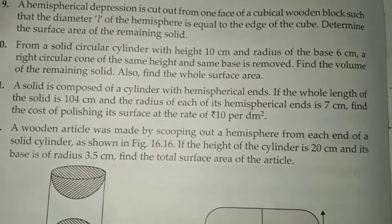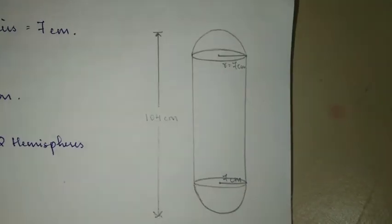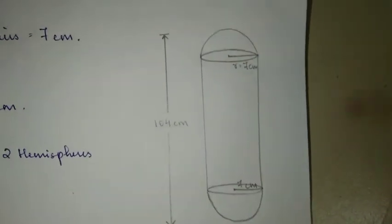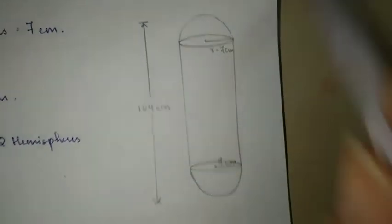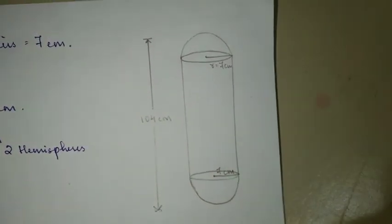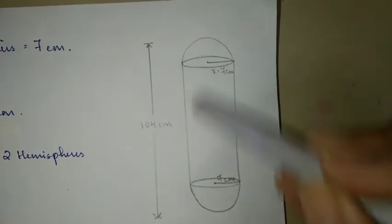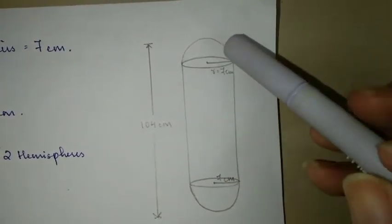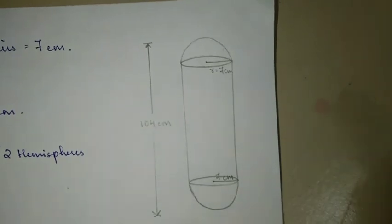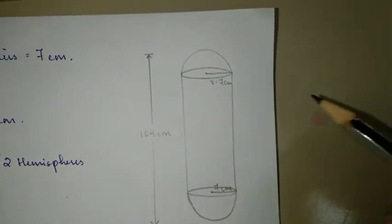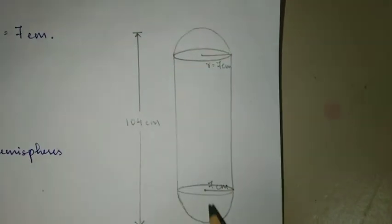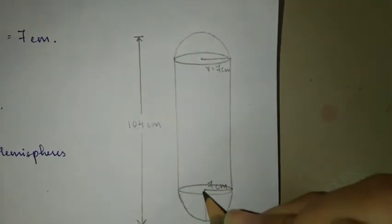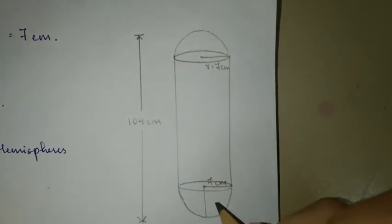Now let's look at the diagram. If you want to draw it please pause here and copy the diagram. As you can see, the cylinder is in the middle, on the top there's a hemisphere and on the bottom as well there's another hemisphere. There is a common radius of 7 centimeters and the whole length of the solid is 104 centimeters.